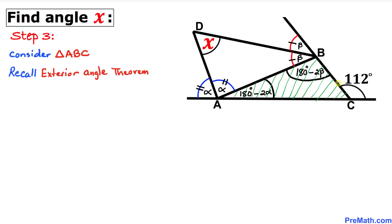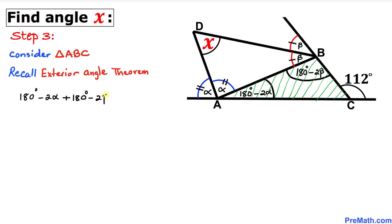So in our case, 112 degrees is our exterior angle, and that is equal to the sum of these two opposite interior angles. Therefore we can write: 180 degrees minus 2 alpha, plus 180 degrees minus 2 beta, equals this exterior angle which is 112 degrees.